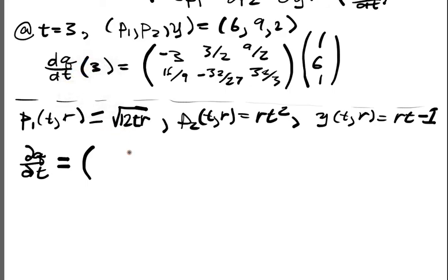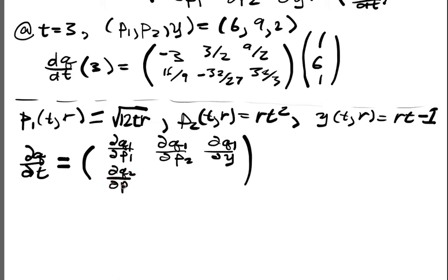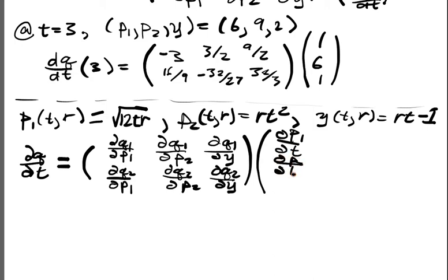That I wrote here, only now I'm going to replace the d/dt's with partials with respect to t. And so of course this is going to be (∂q1/∂p1, ∂q1/∂p2, ∂q1/∂y; ∂q2/∂p1, ∂q2/∂p2, ∂q2/∂y) and of course I just like I said I'm just going to replace these with partials, (∂p1/∂t, ∂p2/∂t, ∂y/∂t).